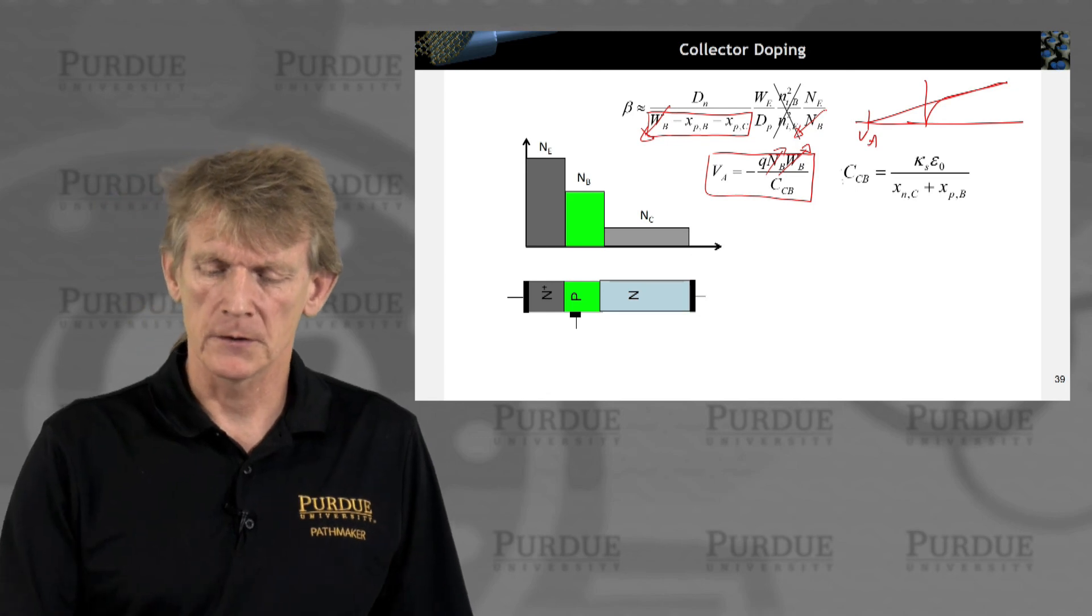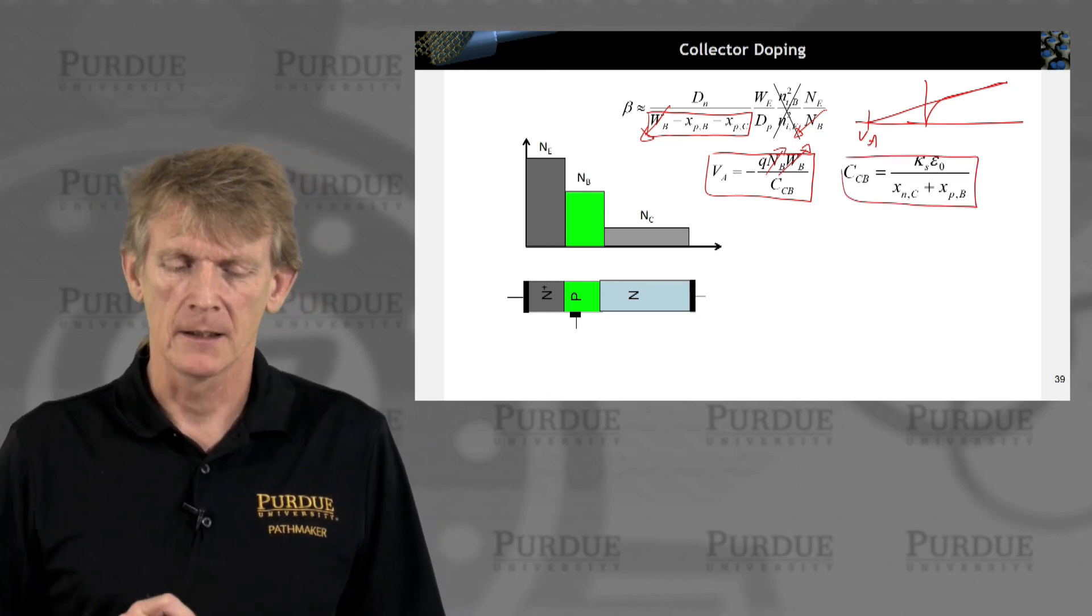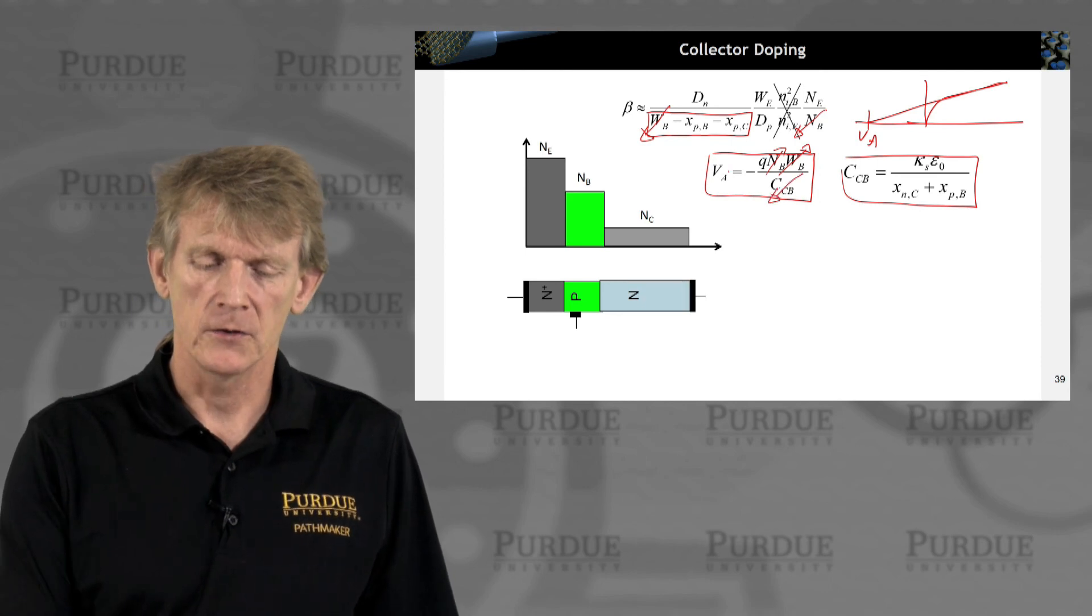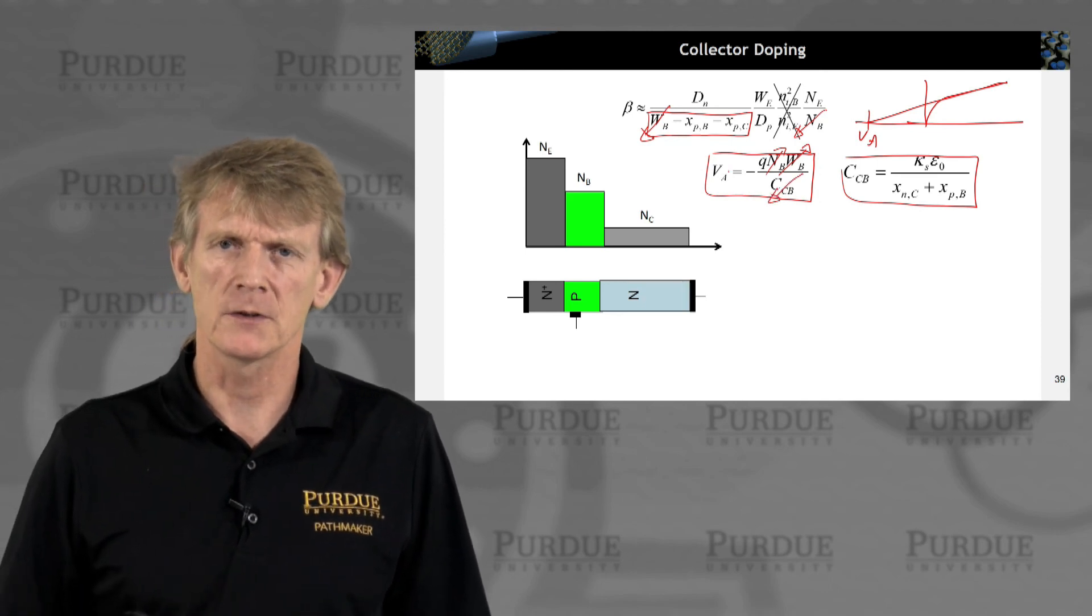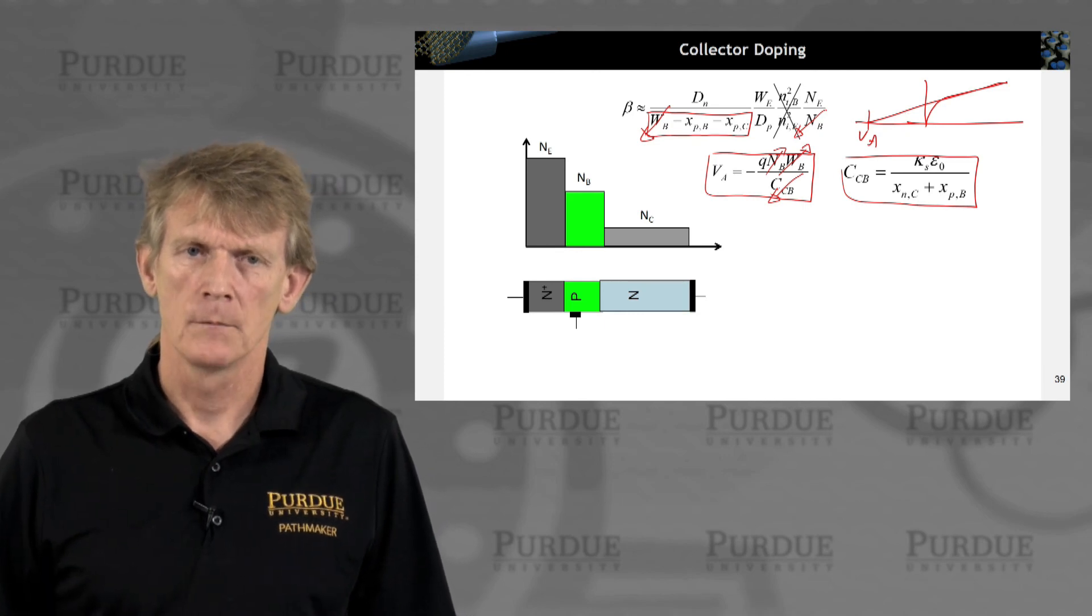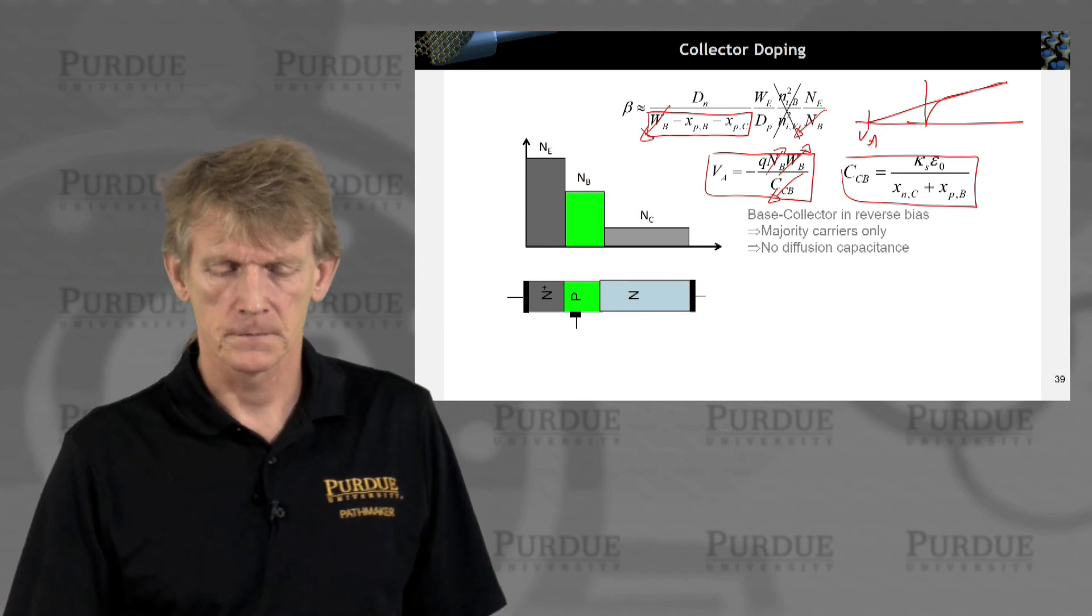So let's see what we can do about this capacitance here, meaning if we could reduce this capacitance, VA would go up and we counteract this base modulation effect.